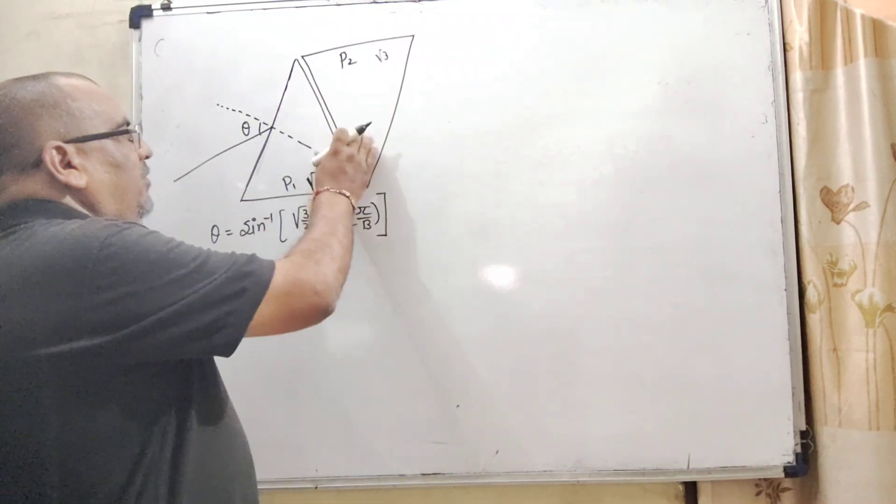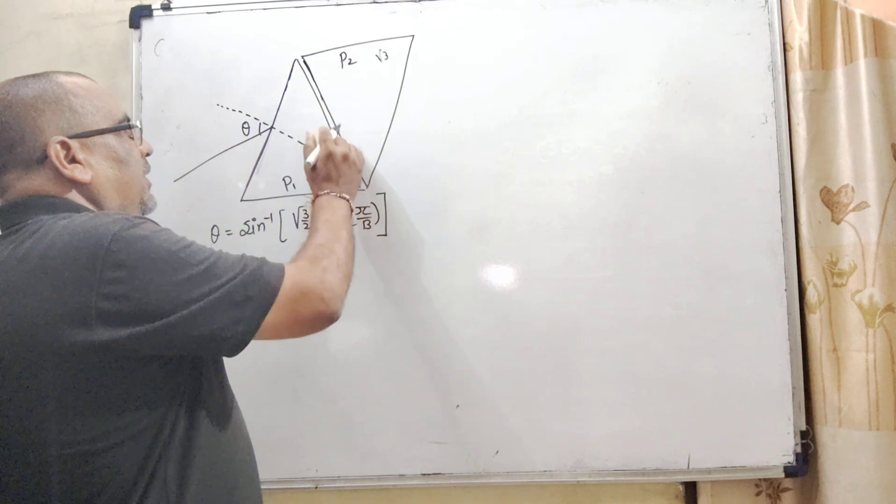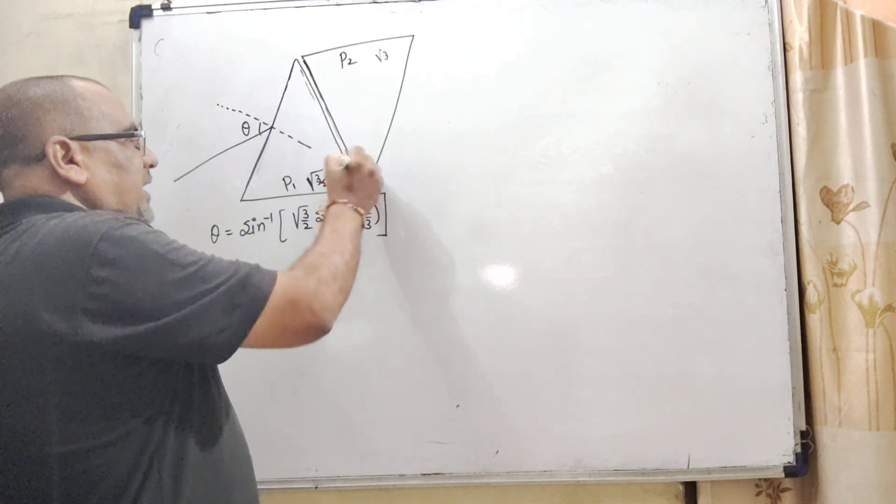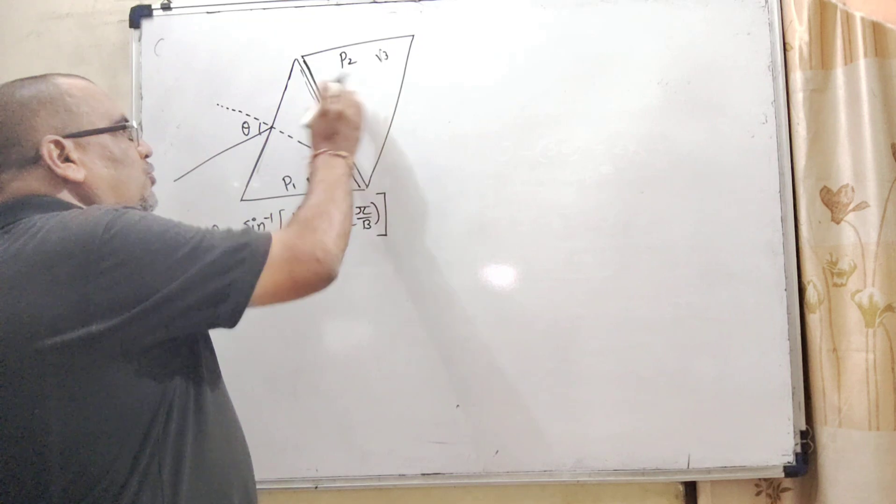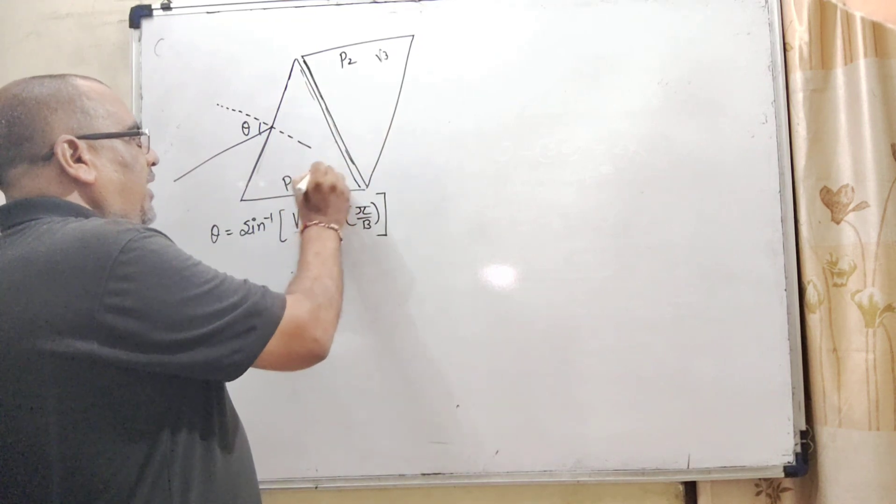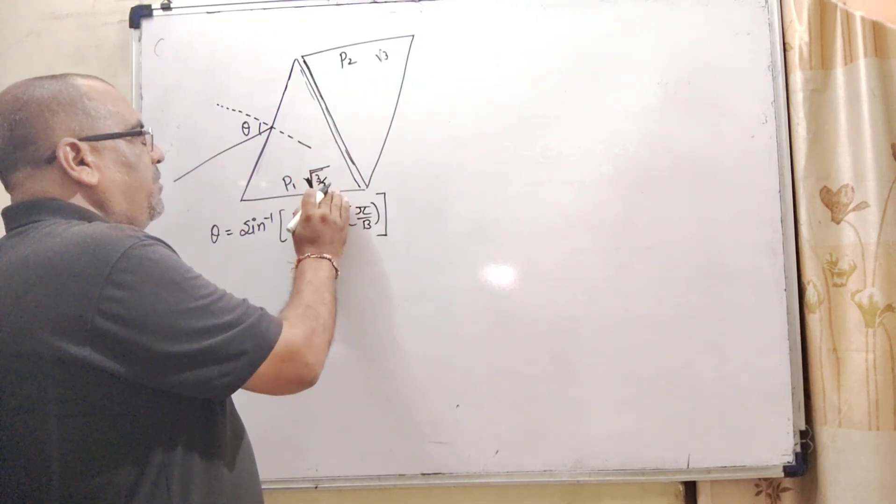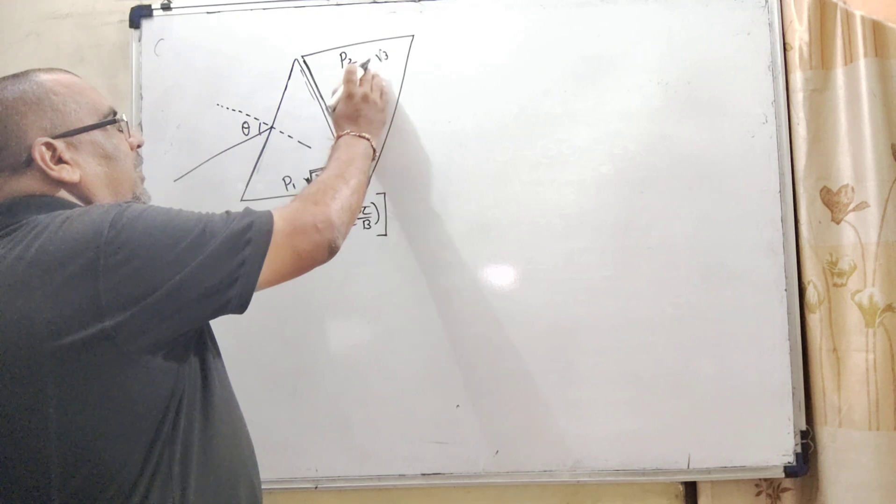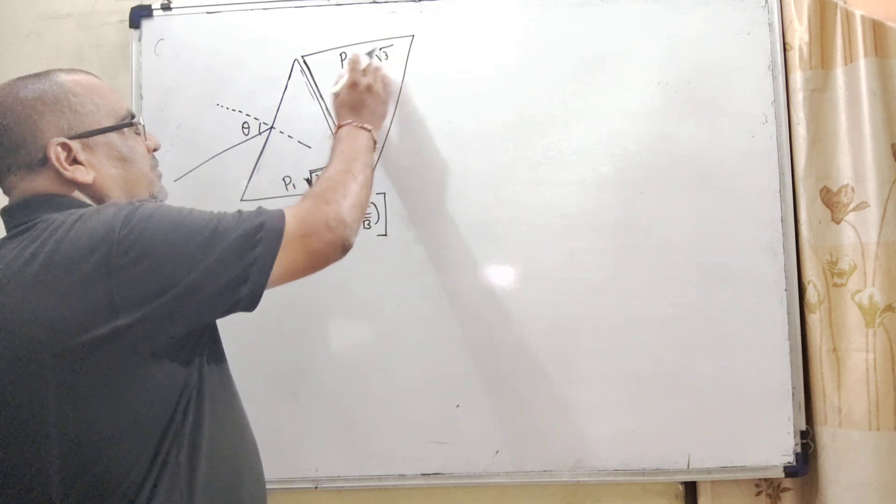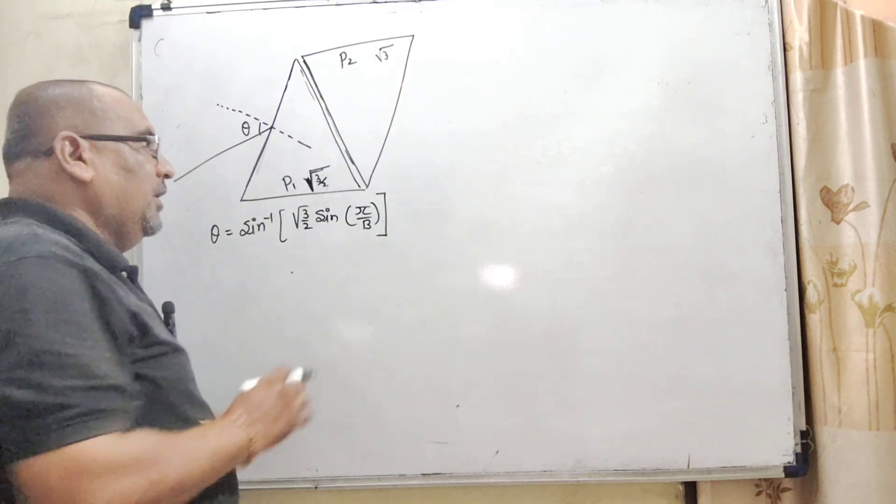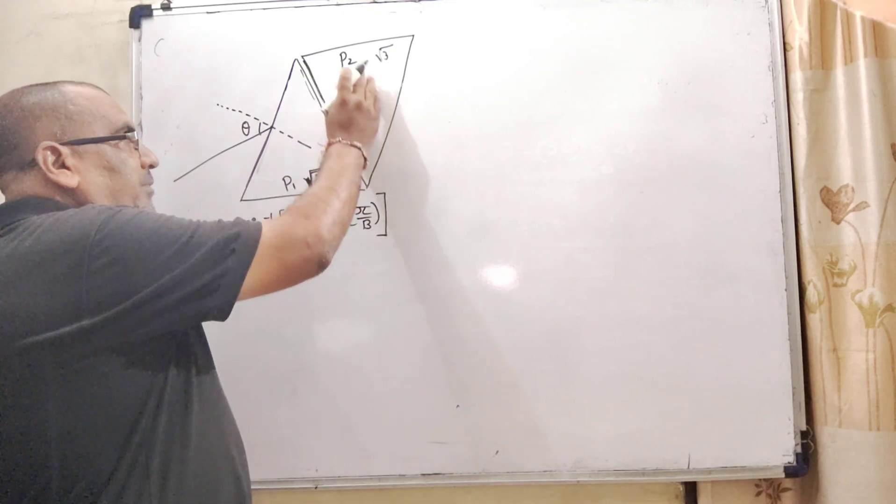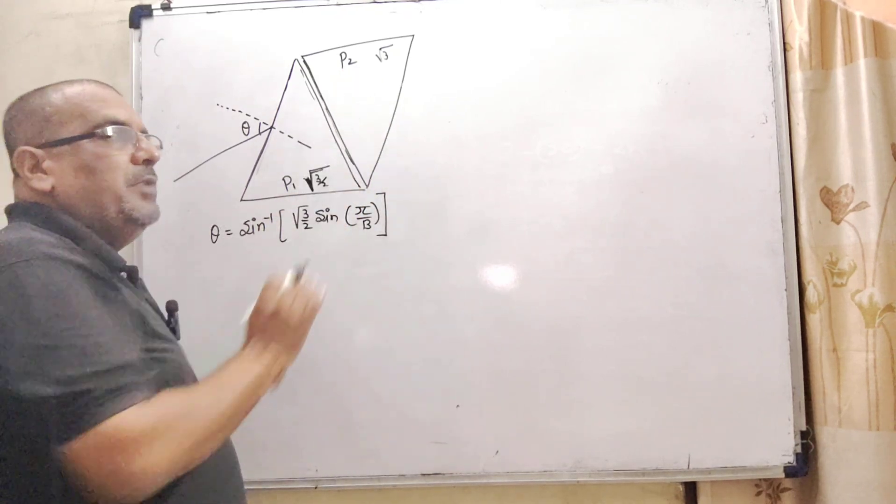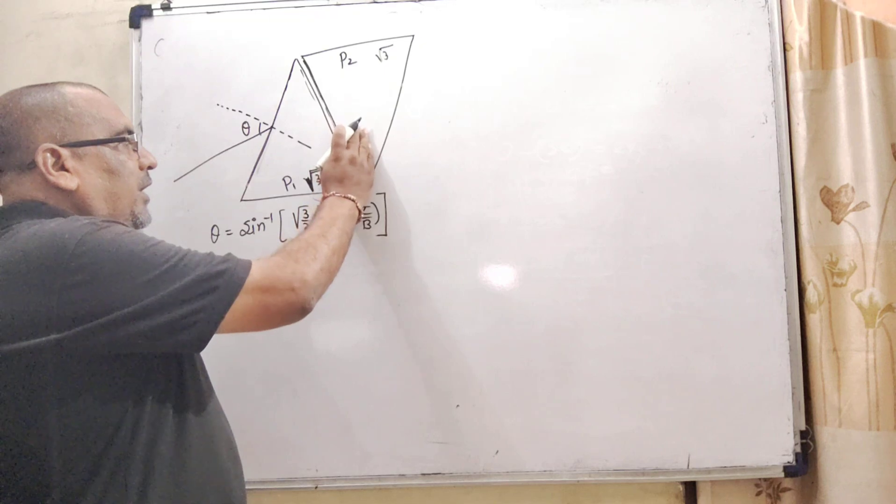What is the question? Here we have given two prisms and one side is parallel to the other side. This is P1 prism and this is P2 prism. The refractive index of P1 is root 3 by 2, and the refractive index of second prism P2 is root 3. Very important thing is that in this prism, means P2, there is minimum deviation shown.